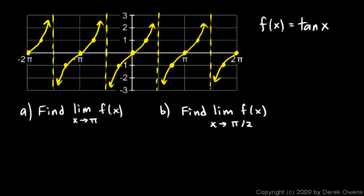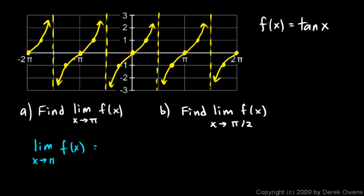We're told to find the limit as x approaches pi and the limit as x approaches pi over 2. At x equals pi, as x approaches pi from the left or from the right, we can see on the graph that in both cases we're getting closer and closer to a y value of 0. So the limit as x approaches pi of f of x is 0.